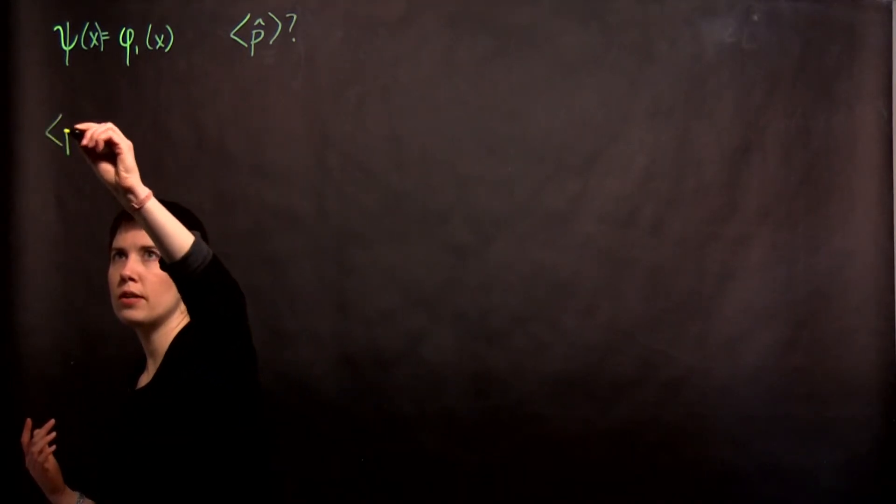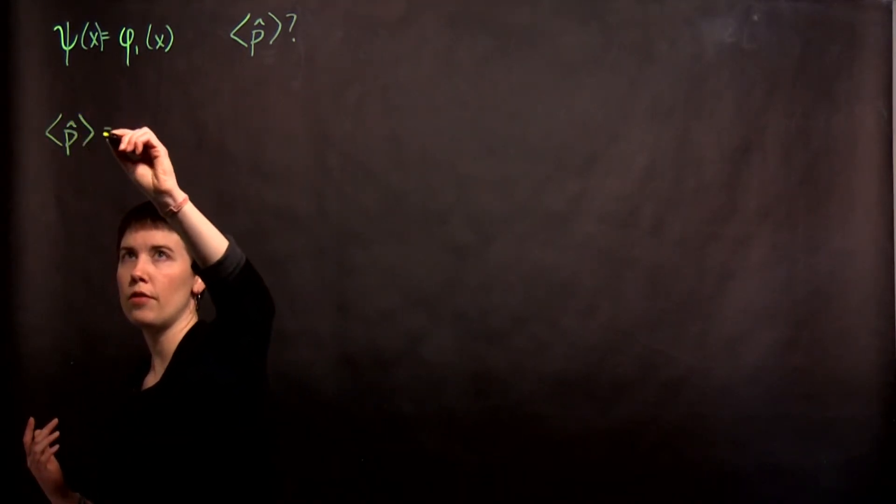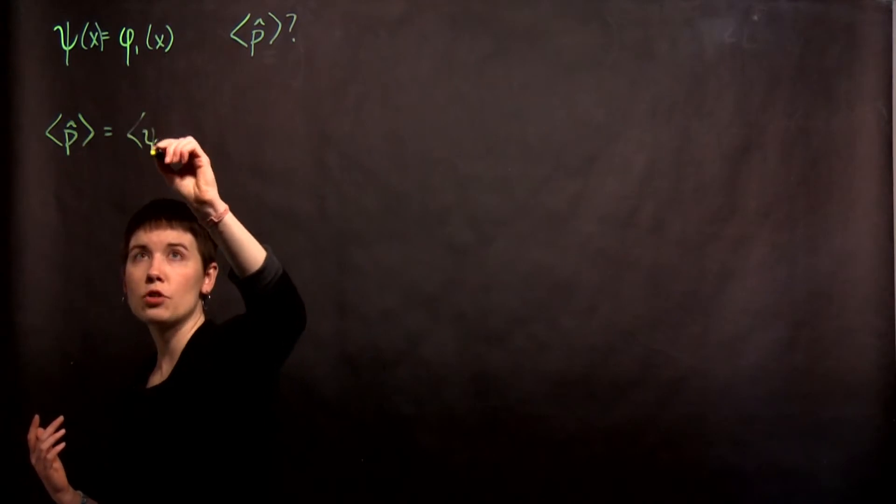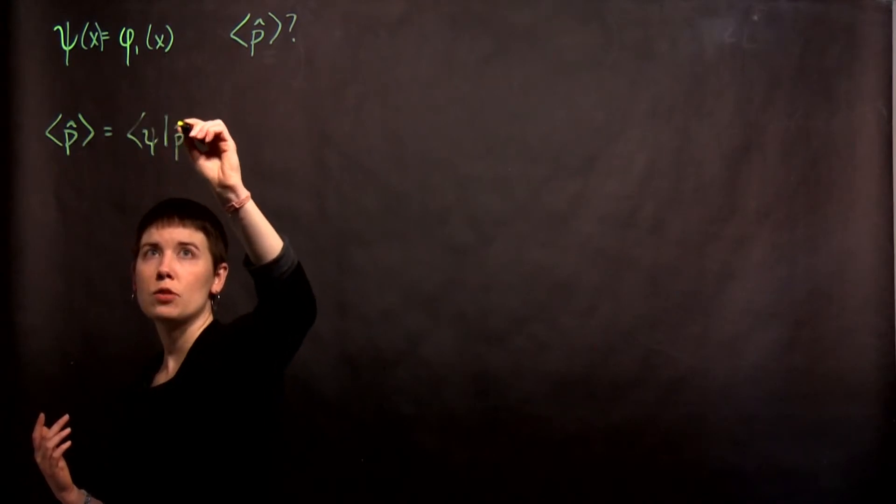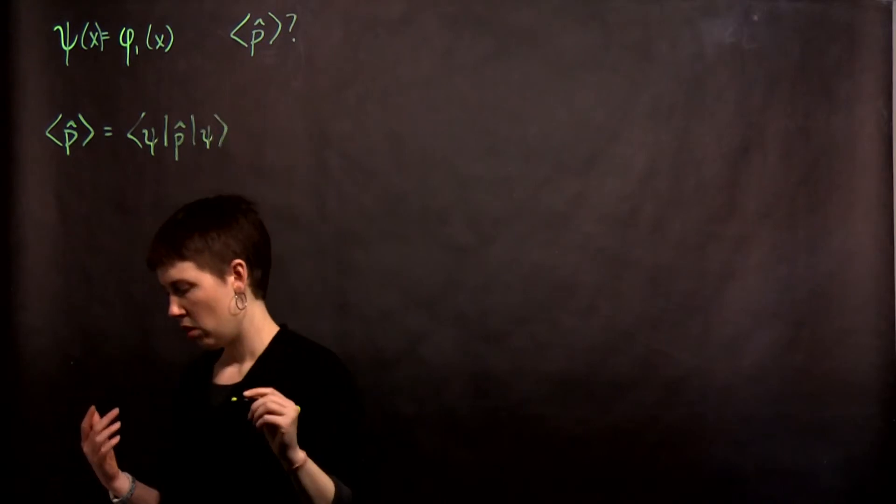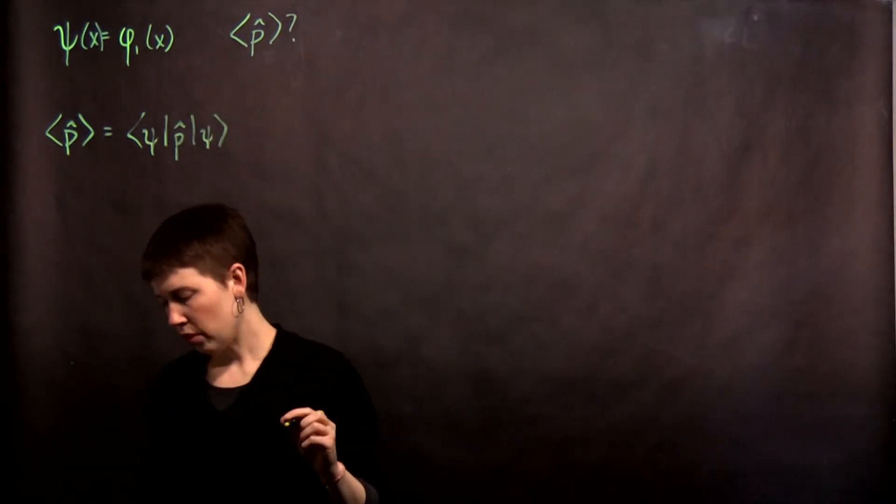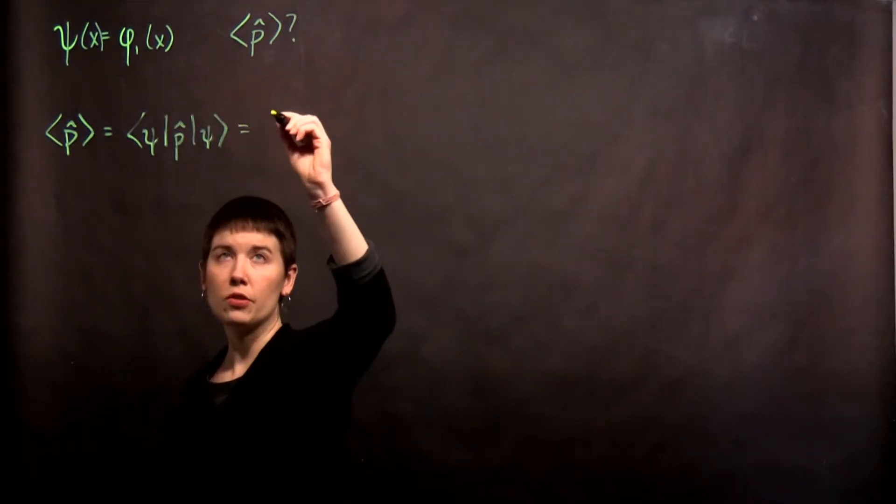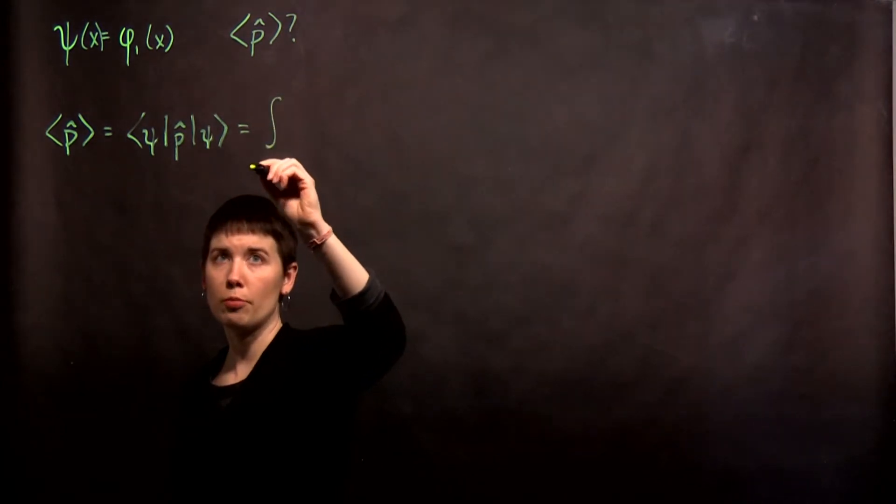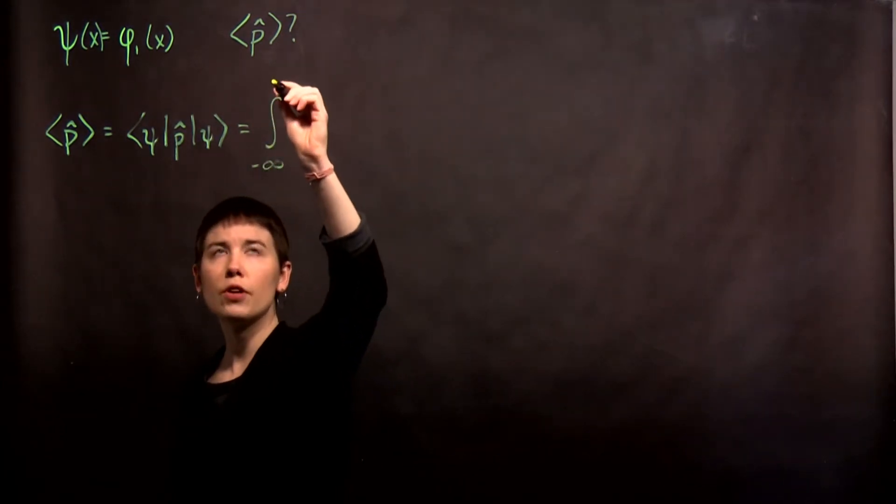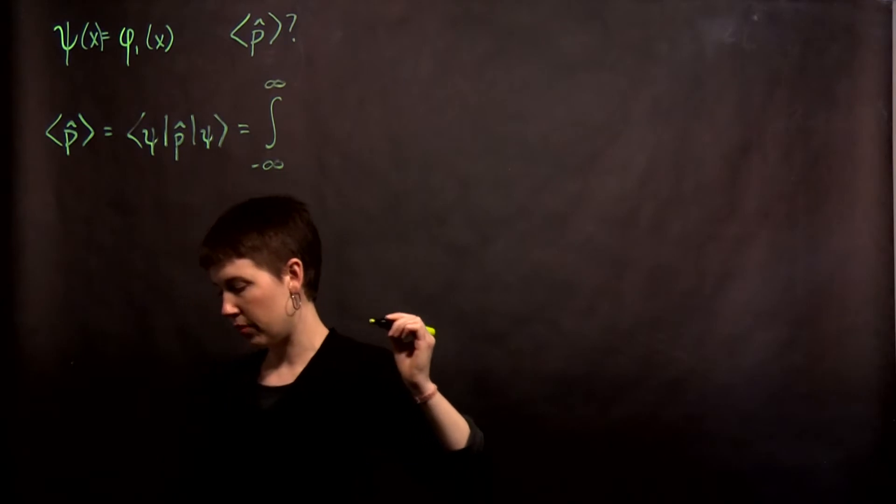We know that if I want to calculate the expectation value of that operator, I need to actually have a specific quantum state in mind in order to do it. Then we have to convert this into an integral if we're in the position representation. I'm starting very generally, but we're going to simplify pretty quickly.